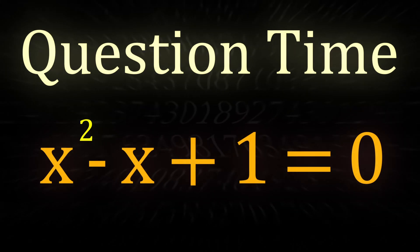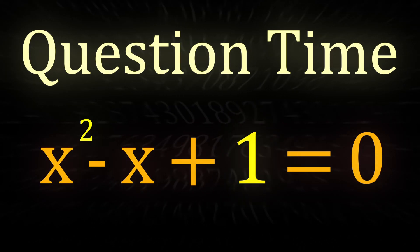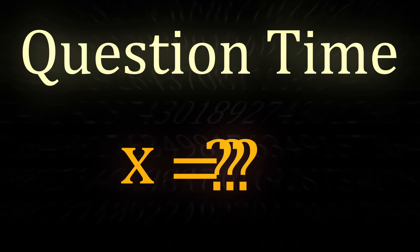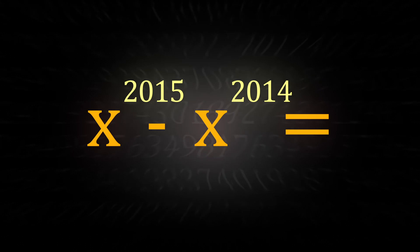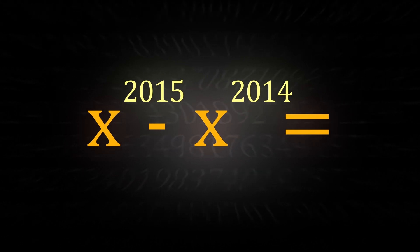We have a quadratic equation of x squared minus x plus 1 equals 0. Find x. Then using the same x, evaluate x to the 2015 minus x to the 2014.